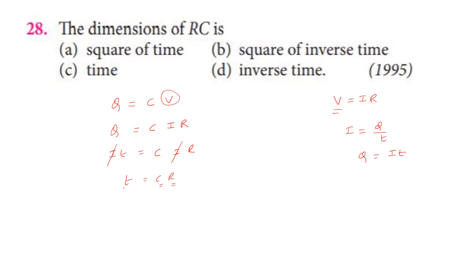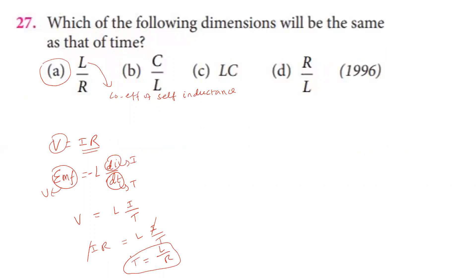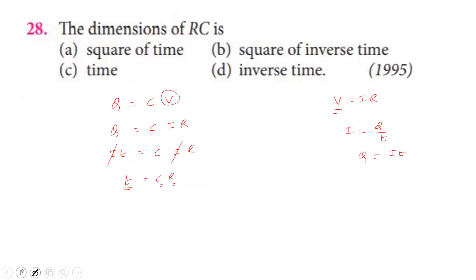RC is the time constant. C into R dimension equals time dimension. So the dimension of RC is the same as time.